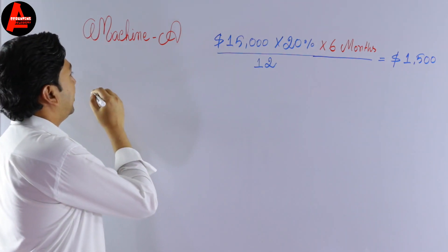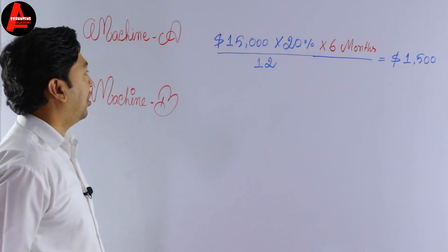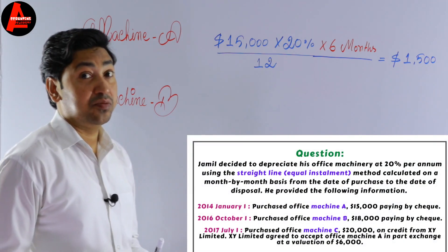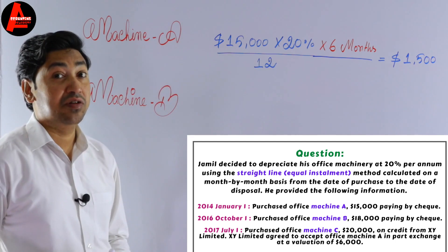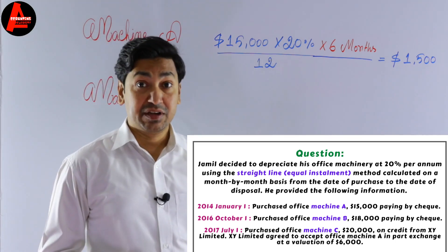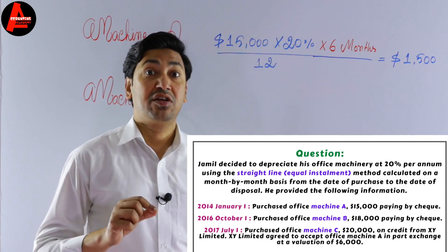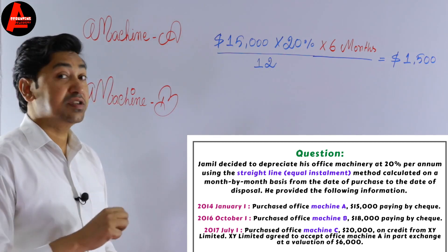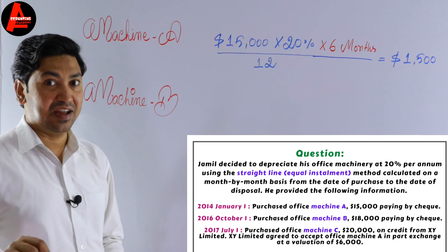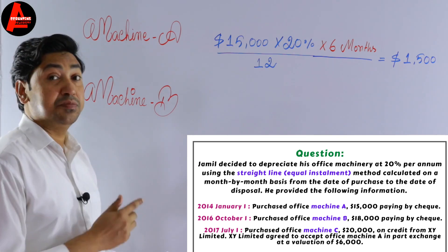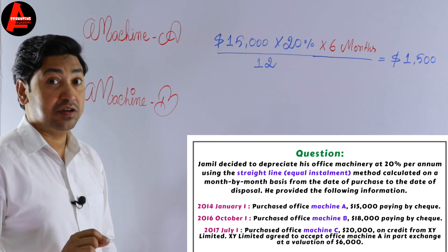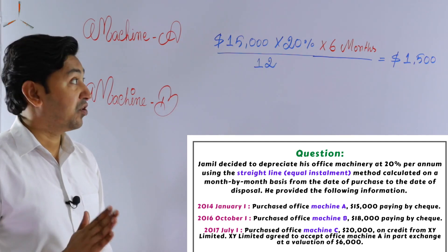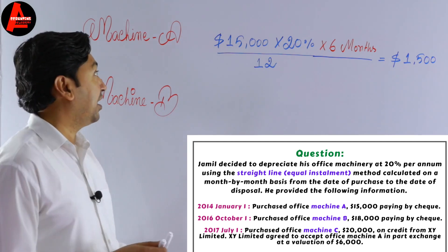Now for Machine B. Machine B was purchased on 1st October 2016. We are calculating depreciation for the year 2017. Machine B was not disposed of or sold during 2017 — it remained in the business in operation throughout the entire year. Therefore, we calculate depreciation for the full 12 months.